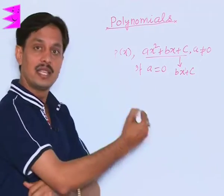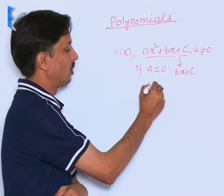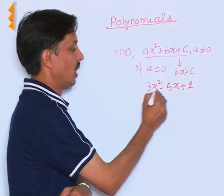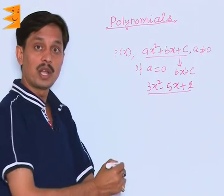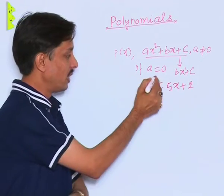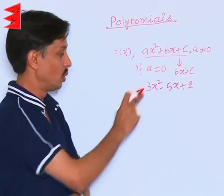And if I write an example, if I take an example like 3 x square minus 5 x plus 2. What kind of polynomial is it? It is a quadratic polynomial. Why? Its degree is 2.